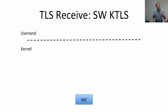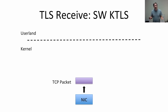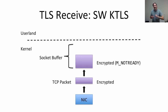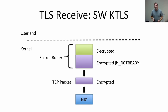More recent work extends KTLS to support software-based decryption, scheduling decryption of TLS records inside the kernel using a software backend or coprocessor. The NIC receives still-encrypted data as normal TCP packets; TCP appends it into the socket buffer marked NOTREADY since userland needs decrypted data. Once encrypted data arrives, those MBUFs are queued to a worker thread for decryption, which converts them into decrypted MBUFs holding plaintext that userland can then receive via recvmsg.